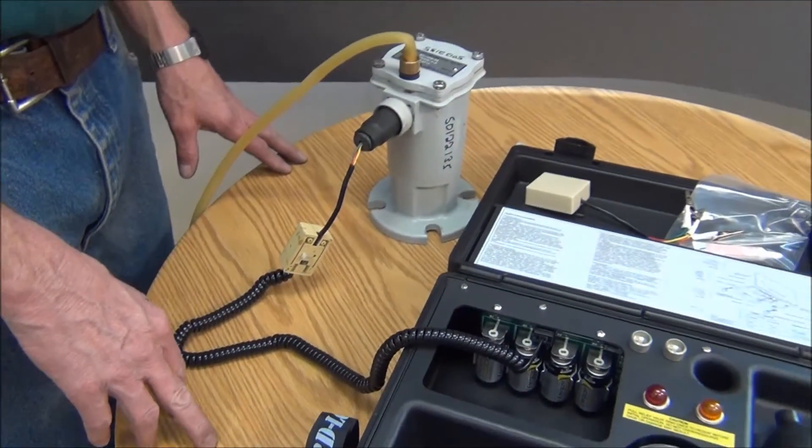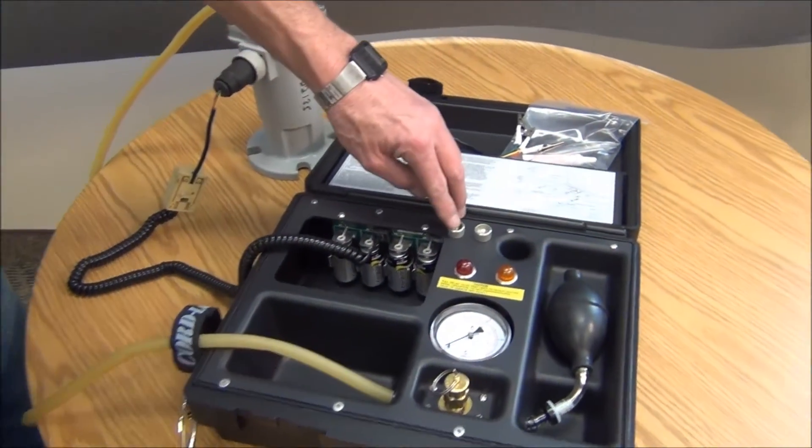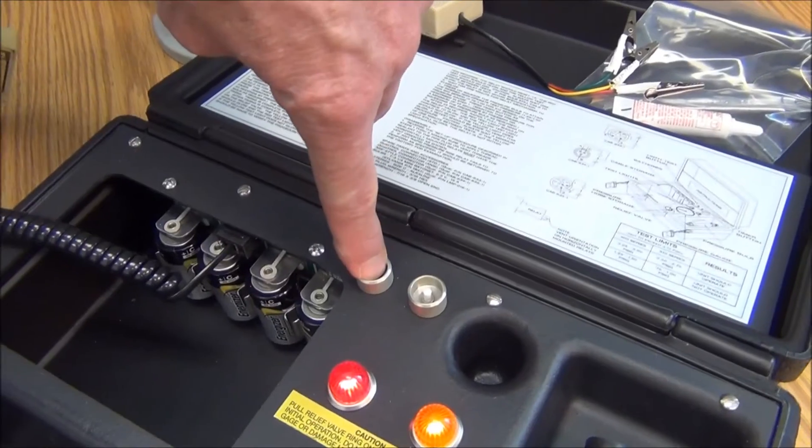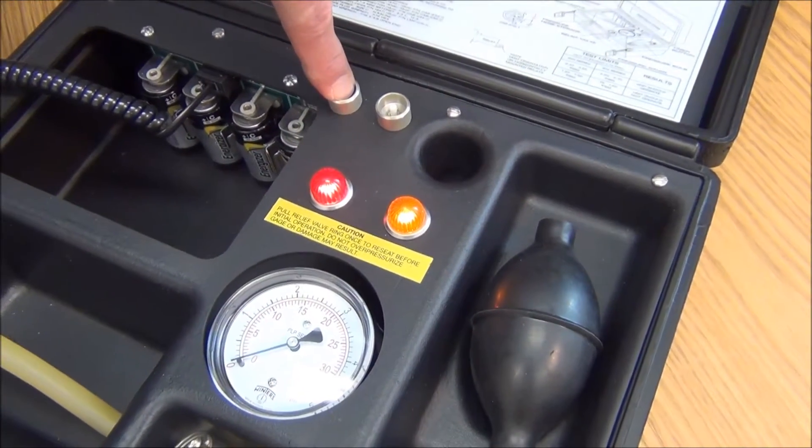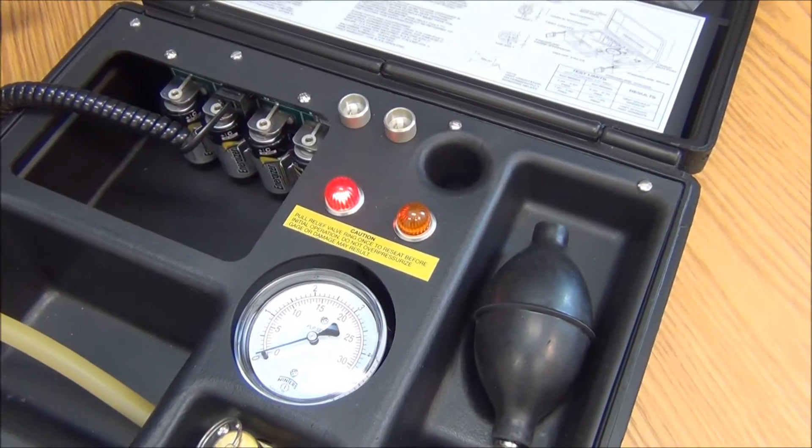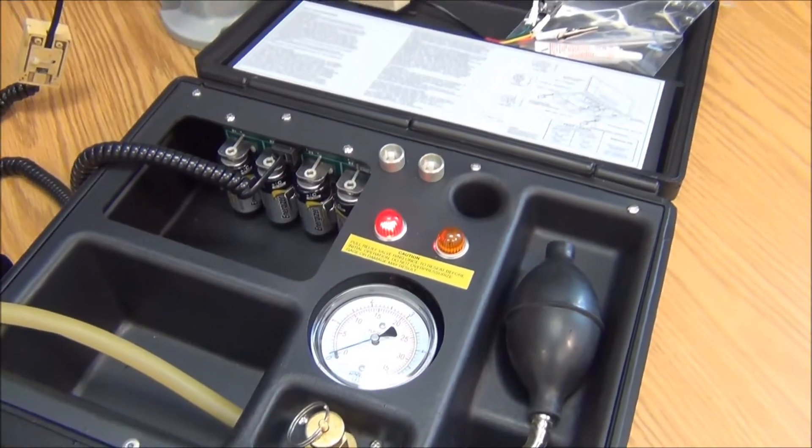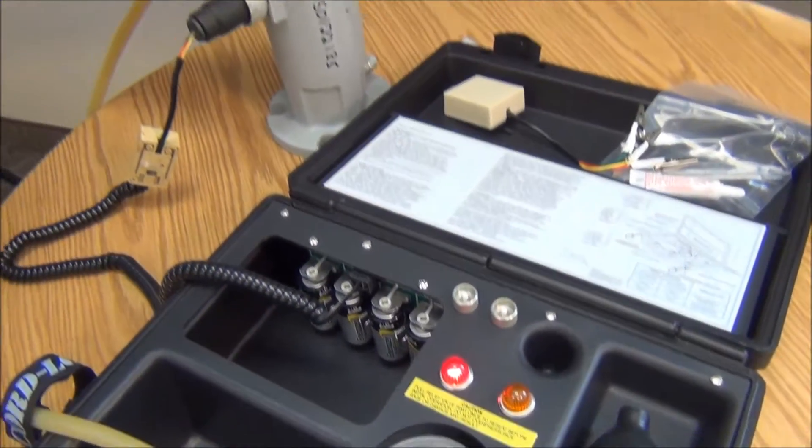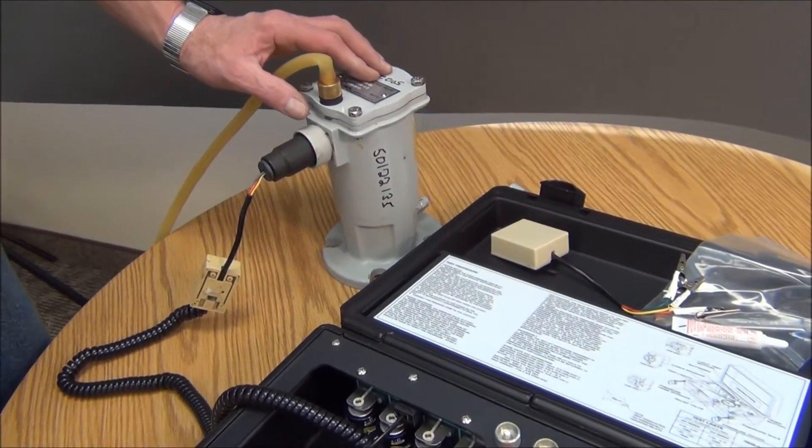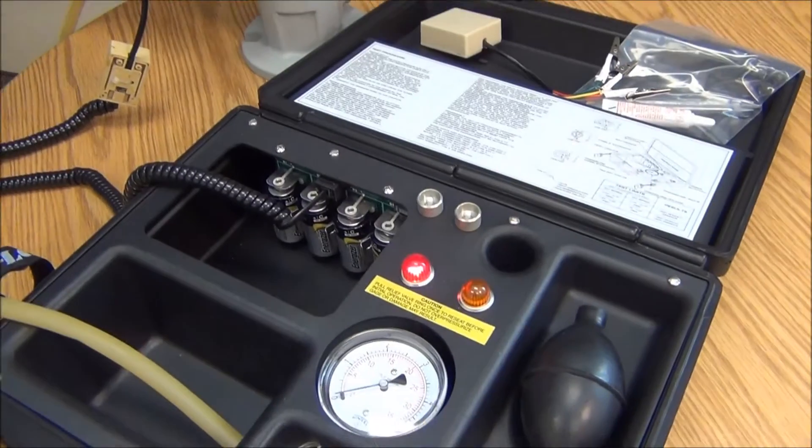As far as using the unit, the first thing you do is push this left-hand button. When you hold it down, you should see two lights, which turns the power on to this test kit. After you take your finger off the button, you should see a red light. That means this unit is in the untripped position.